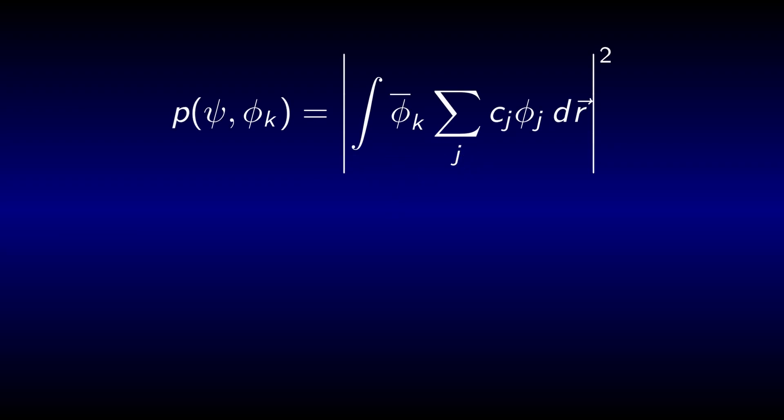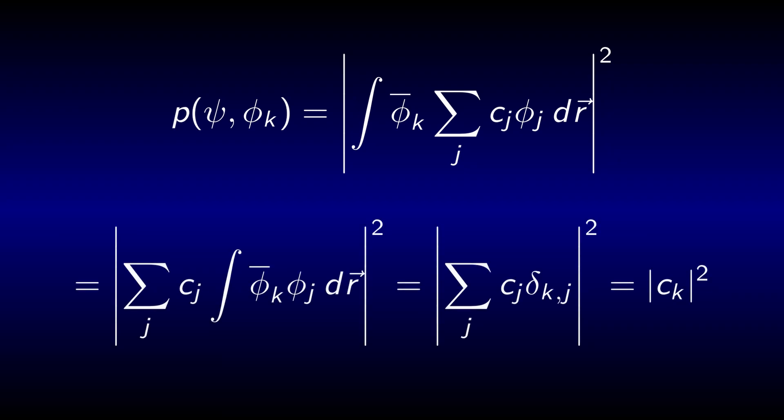If we plug this into the expression for the probability to find psi in phi k, we find that only a single integral survives. If you've never worked with the delta symbol before, take a moment to convince yourself that this is the case. The probability is just given by the absolute squared of the pre-factor. However, not a single integral was explicitly calculated for this result.